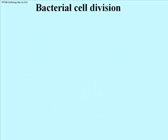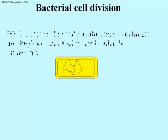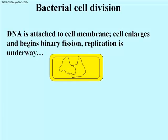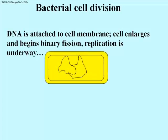Let's take a look at bacterial cell division and specifically when in the life of a cell does DNA get synthesized. As you can see here, DNA is attached to the cell membrane of bacterial cells, and as the cell grows and begins binary fission, replication is already underway. What you're looking at are two ragged-looking circles of DNA still attached to one another — recall replication of bacterial circular chromosomes and the theta images. You're looking at that in a cartoon of a living cell here.